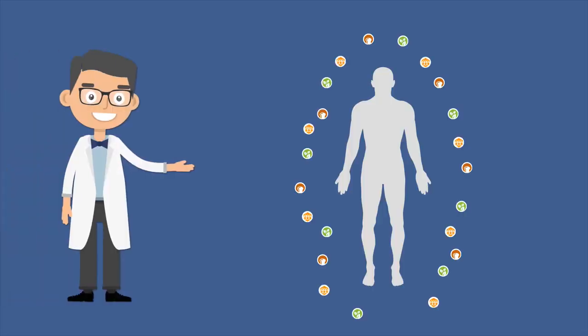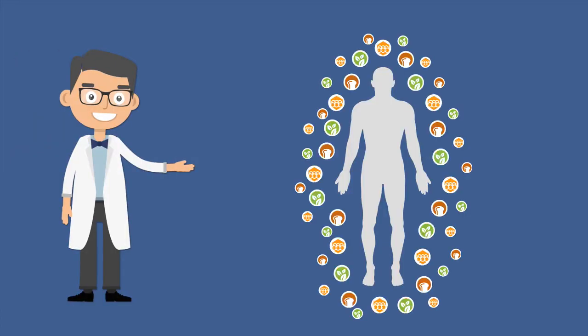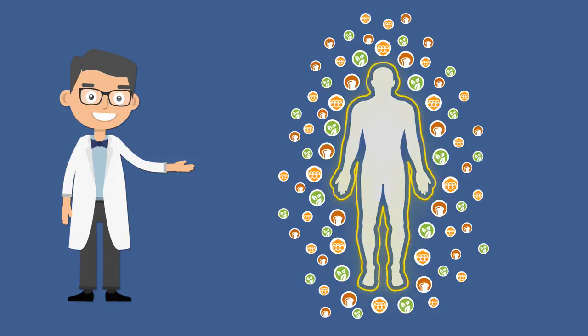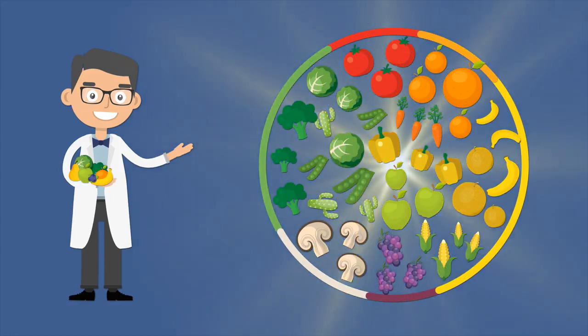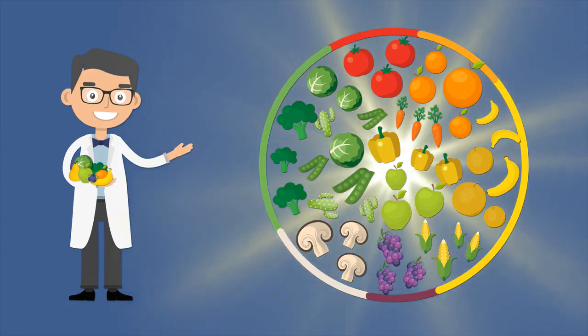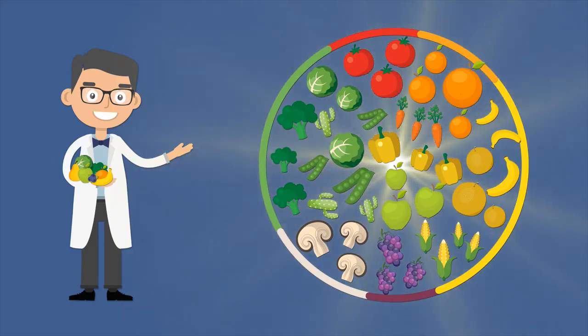So in order for us to actually prevent cancer, we need a variety of phytochemicals, and we need a lot of phytochemicals. This means we need to eat a variety of fruits and vegetables and a lot of fruits and vegetables.